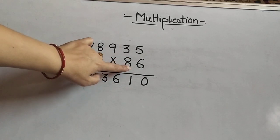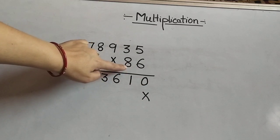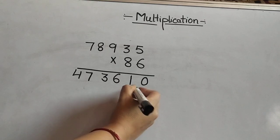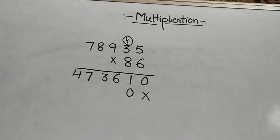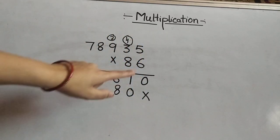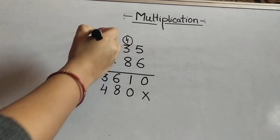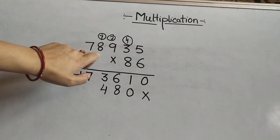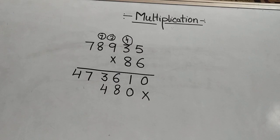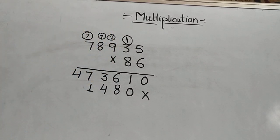Now the digit in the tens place is 8, so we have to multiply this number by 8. We will give 1 cross here because we have done the multiplication by the 1s digit; now we are multiplying by the tens digit, that is 8. 8 times 5 is 40, 0 here and 4 carry. 8 times 3 is 24 plus 4 is 28, 2 carry. 8 times 9 is 72 plus 2 is 74. 8 times 8 is 64 plus 7 is 71, 1 here and 7 carry. 8 times 7 is 56 plus 7 is 63.